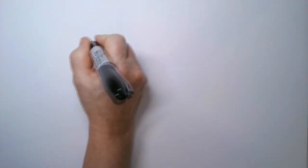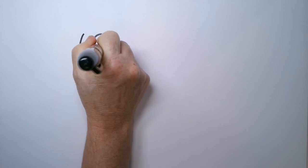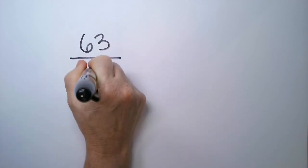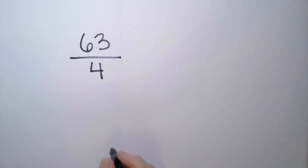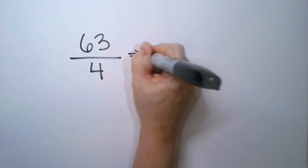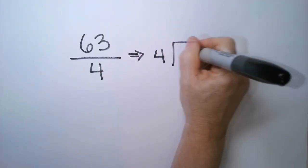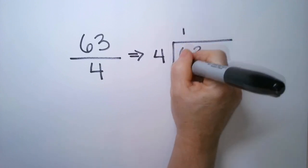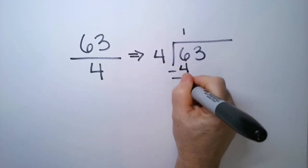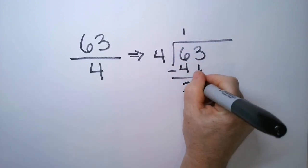Suppose I have a number like 63, and I want to divide it by 4. How many times does 4 go into 63? Let's find out.